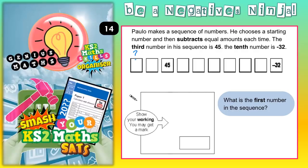The third number in his sequence is 45. The tenth number is negative 32. We need to figure out what the first number in his sequence is. Now this is quite tricky — we've only got two numbers to go on: 45 and negative 32. So what we're going to do first is figure out the big gap between 45 and negative 32.